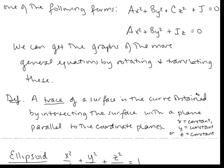A key aspect of sketching these graphs is to use traces of the surface. A trace of a surface is the curve obtained by intersecting the surface with a plane parallel to the coordinate planes. For example, you're going to set x equal to a constant and see what curve you get by intersecting that with your surface. Set y equal to a constant and set z equal to a constant and see what traces we get. That's going to help us sketch the surface.